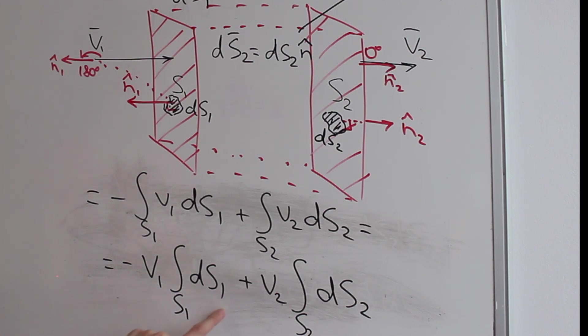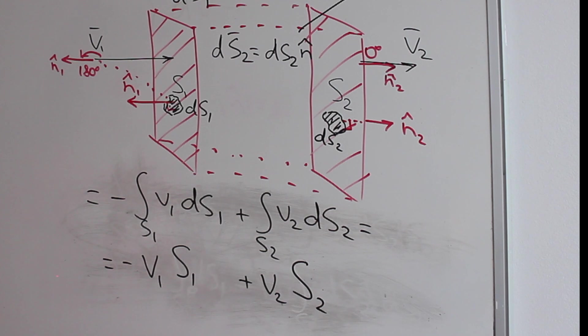So how can we simplify this? The integral means the summation of little surface area ds1 over the whole control surface s1. What will that give us? Well, that will just give us the whole control surface s1. So we can substitute the integral with just the whole surface area s1. And same could be said about the surface s2, which gives us just the control surface s2.